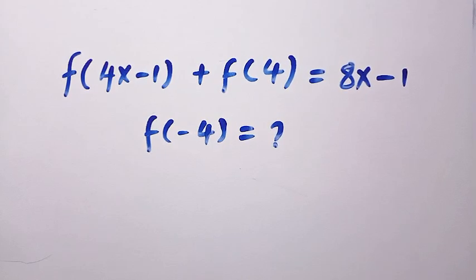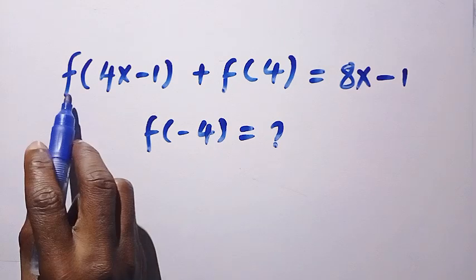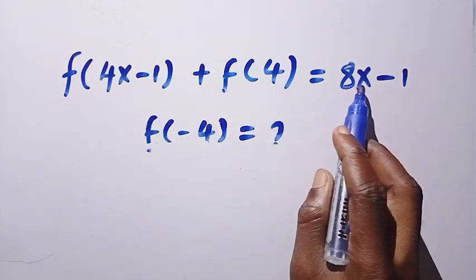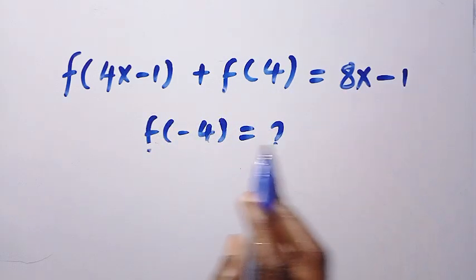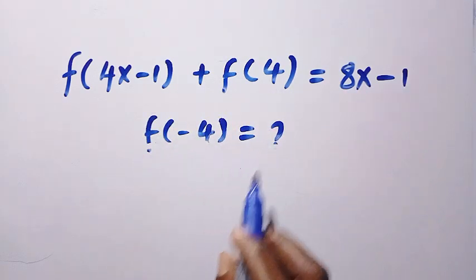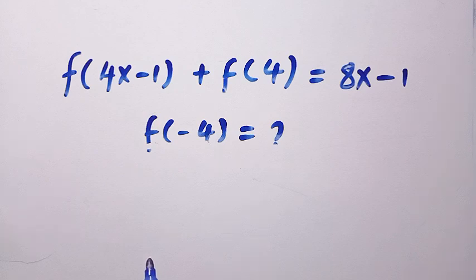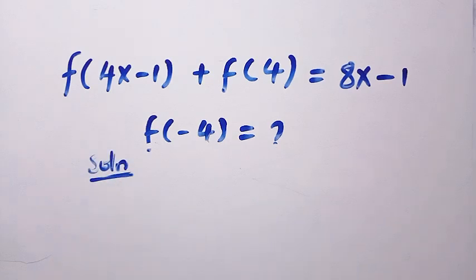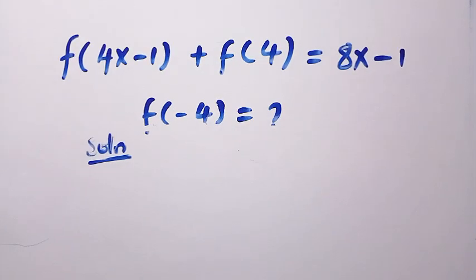Good day viewers, you are welcome. How to solve these nice functional equations in a general form? We are given f of 4x minus 1 plus f of 4 equals 8x minus 1, and we need to find f of minus 4. I will solve this problem in two different methods and let's see how we can do that.